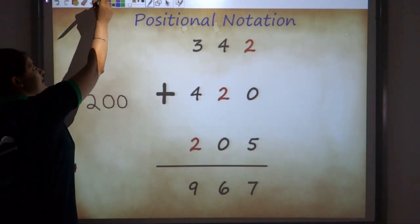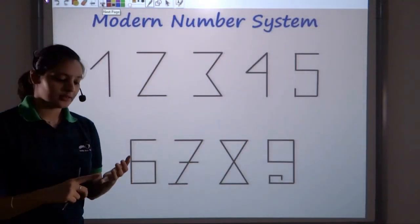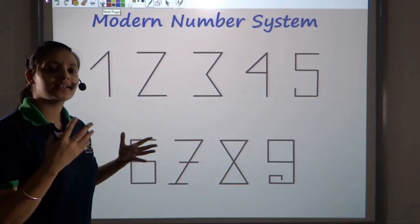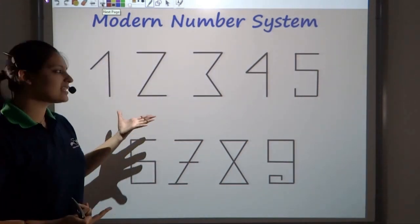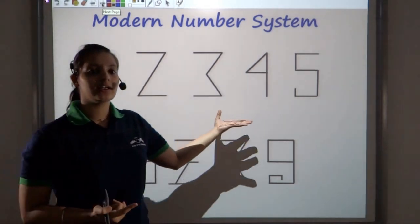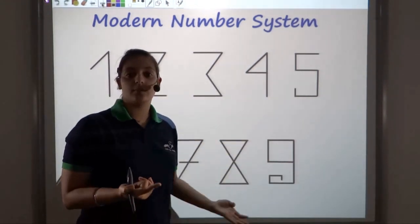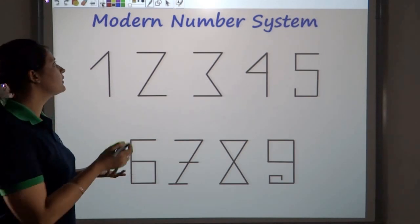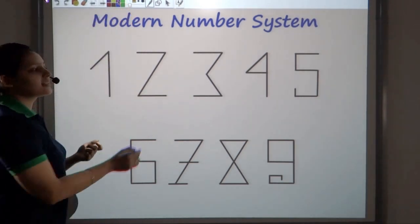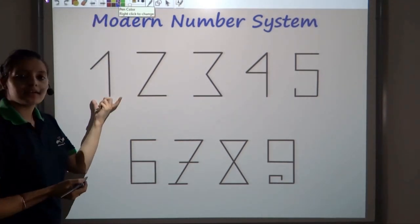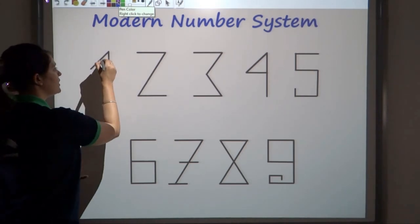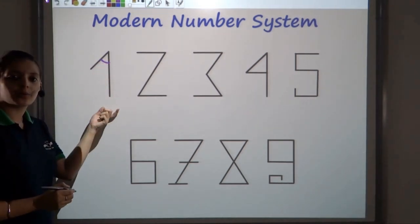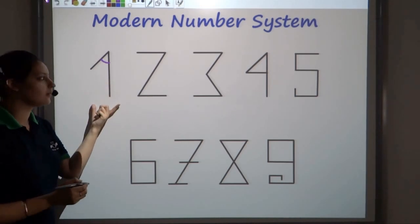So we've seen the ten digits which we use in our modern number system. Now, there's an interesting side to it, which says that how did numbers actually came about? Why was this symbol used for one, and not any other symbol? An interesting study says that number one actually came from the number of angles. So you can find only one angle in this number one, and so this number one came.